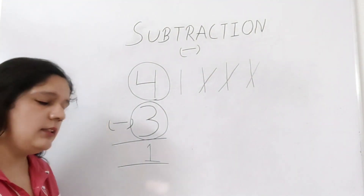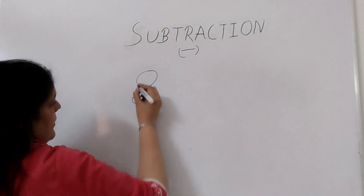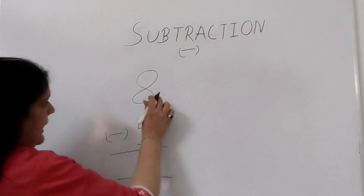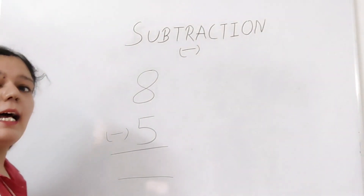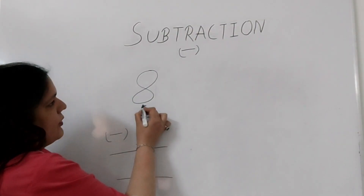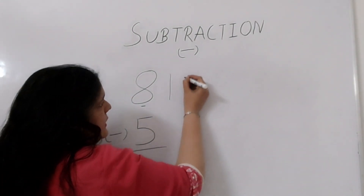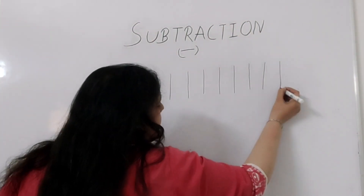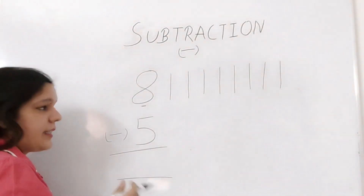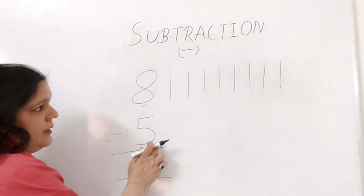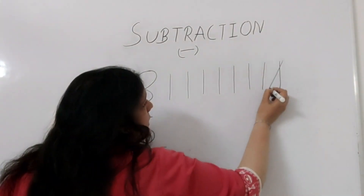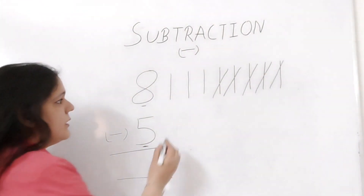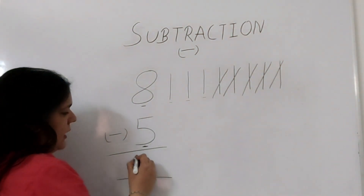Let us take one more example: eight minus five. How many lines will I first draw? Eight lines — one, two, three, four, five, six, seven, and eight. Now how many lines will I be subtracting or cutting from these eight lines? Five lines — one, two, three, four, and five. Now how many lines do I have left? This is one, two, and three. So the answer will be three.